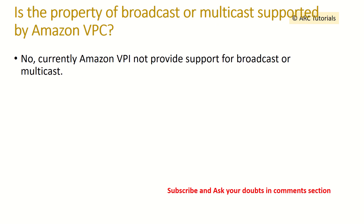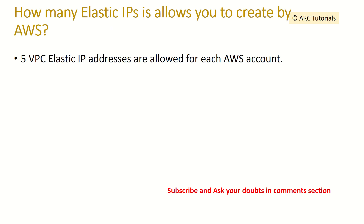Is the property of broadcast or multicast supported by Amazon VPC? No, they are not currently supported in Amazon VPC. How many Elastic IPs are you allowed to create in AWS? You can create five VPC Elastic IP addresses per AWS account.